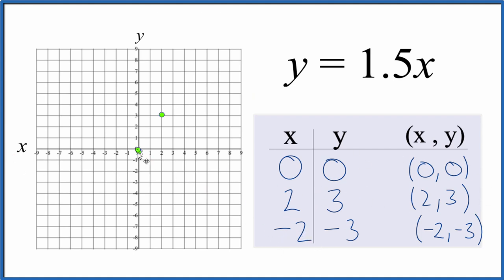So we have negative two for x, negative three for y, and there's our line. Let's put a line through that. And then we'll put arrows here to show that this goes to infinity. And this is the graph for y equals 1.5x.